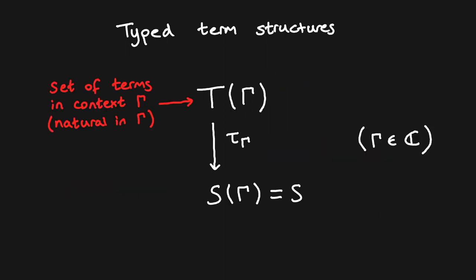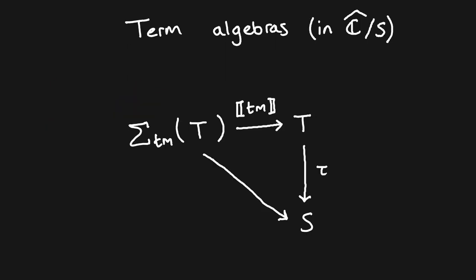More explicitly, we can consider sets of terms natural in their context: for each context Gamma, we have a set of terms in that context and a function assigning a type to each term. As with types, we consider algebraic structure on terms, but here the algebraic structure lives in the presheaf category, which allows us to describe binding algebraic structure. By fibreing over S, we can additionally describe multi-sorted structure. Note that this means the algebra lives in the slice category over S, rather than directly in the presheaf category. If you're familiar with polynomial functors, you might already spot that this structure is suggestive of a polynomial algebra.